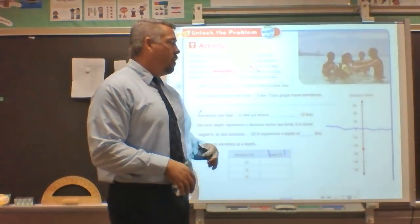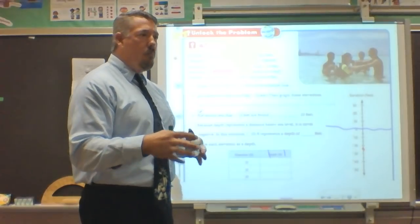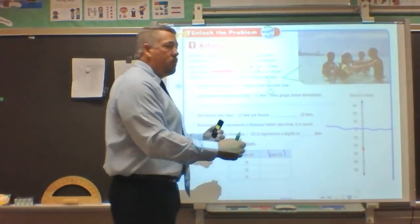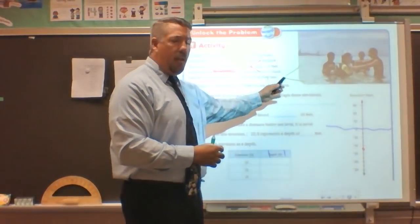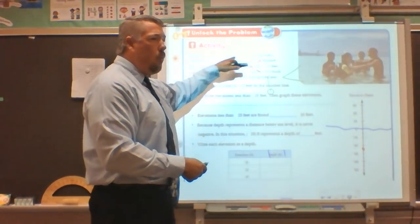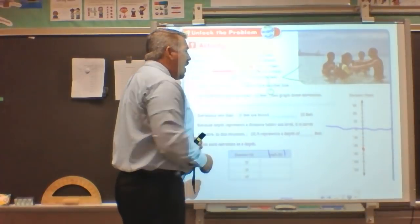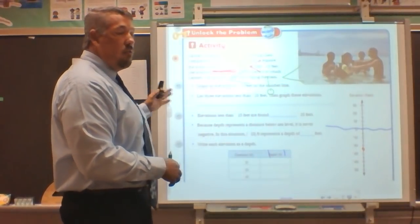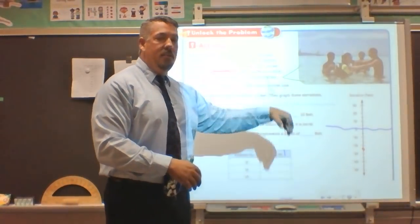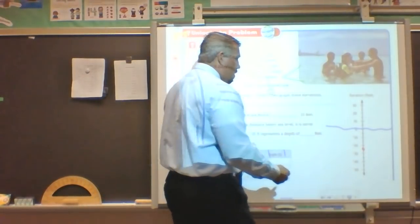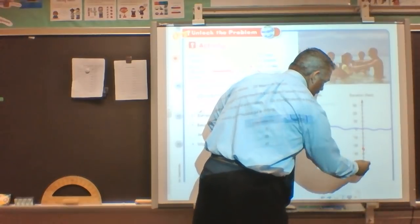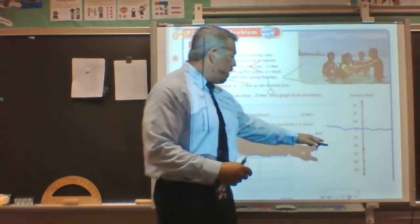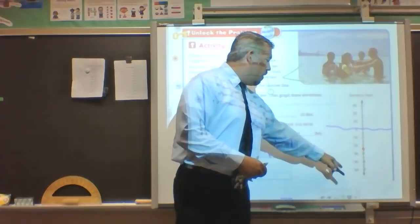On a number line, numbers to the left closer to zero in the positive realm are always less in value. And on the negative realm, numbers closer to zero are greater, while further away from zero their value is less. So the values going down are my less numbers. What I pointed to: negative 30 feet, negative 40 feet, negative 50 feet.